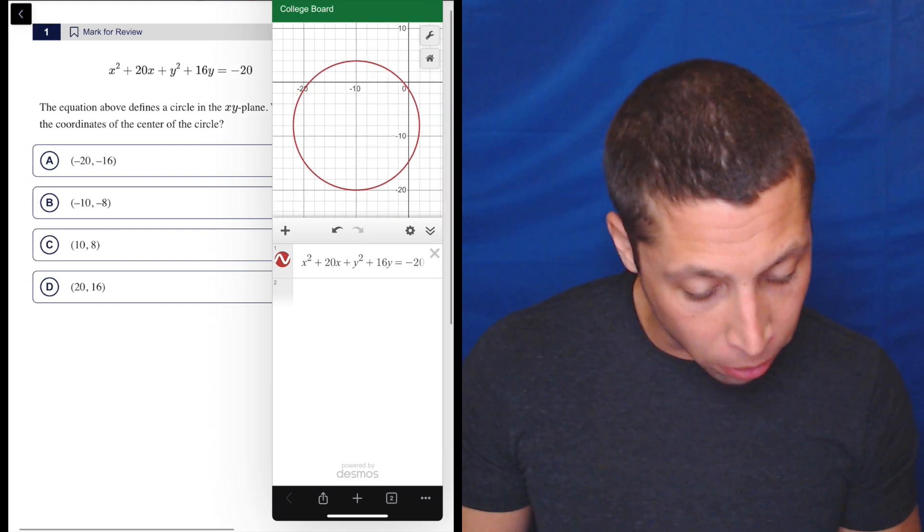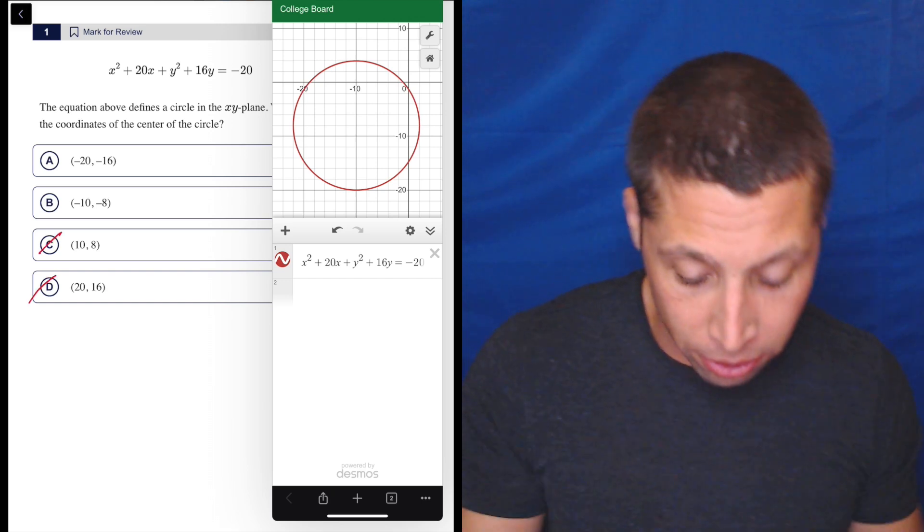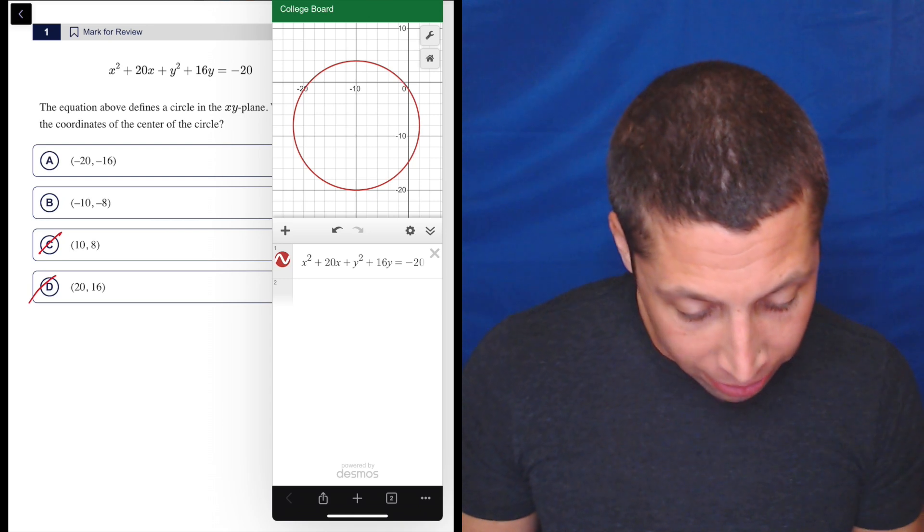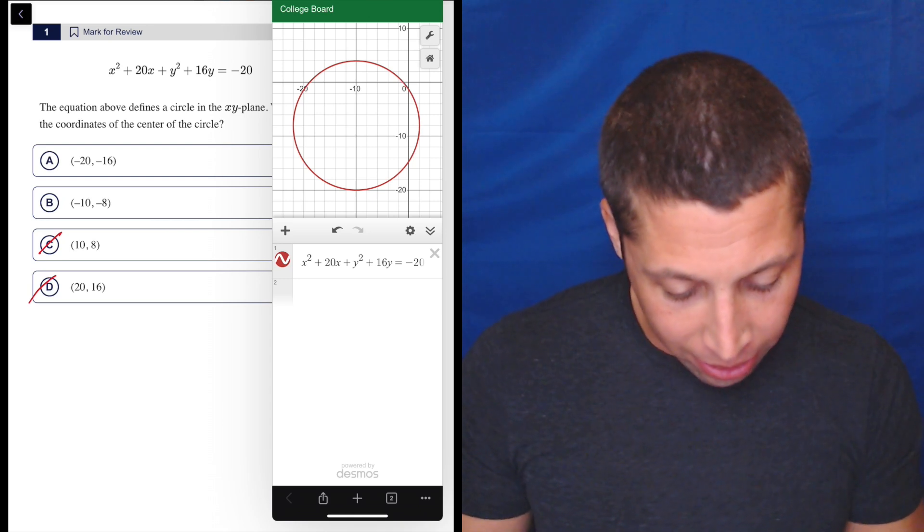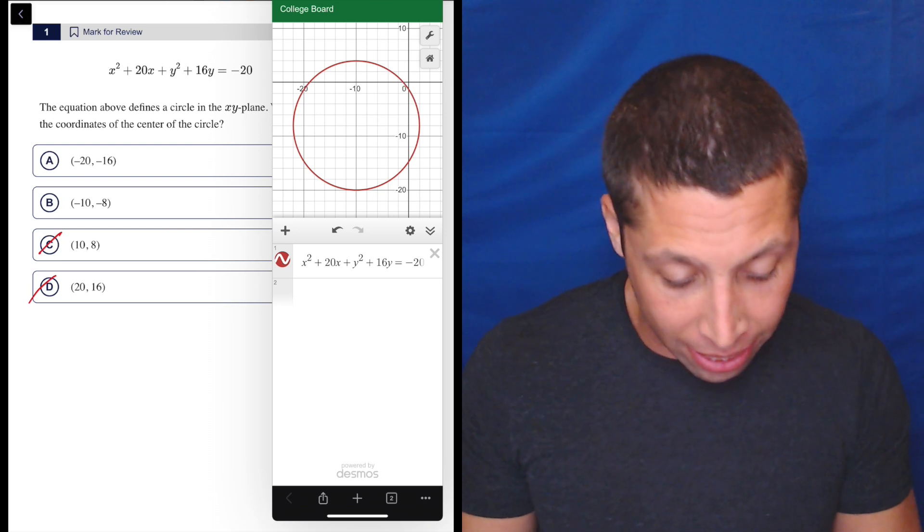So first of all, it's definitely not one of the positive ones: (10, 8), or (20, 16), right? It's not even in that quadrant. And then negative 20, negative 16 is kind of outside of the circle, maybe just on the edge of it. So it's really this negative 10 and negative 8.